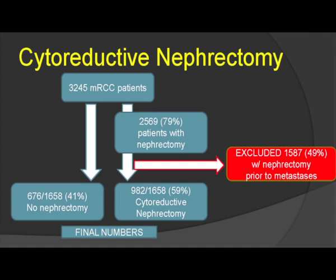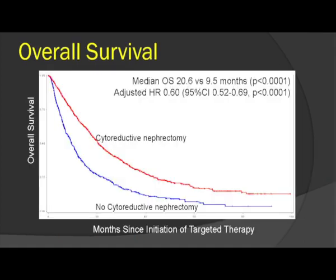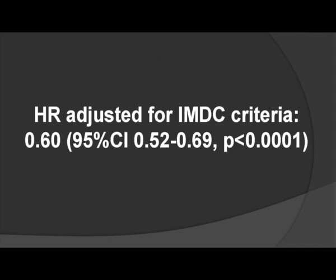We were left with 676 patients without cytoreductive nephrectomy and 982 with cytoreductive nephrectomy. There is a big difference in median overall survival — 20 months versus 9 months — but you must stop and not rely on this Kaplan-Meier curve because it is full of biases. You have to adjust for all prognostic factors, since sicker patients may not have received surgery. Adjusting using our IMDC criteria, the hazard ratio is 0.60 (95% CI: 0.52–0.69), suggesting a favorable effect of cytoreductive nephrectomy in synchronous metastatic disease.